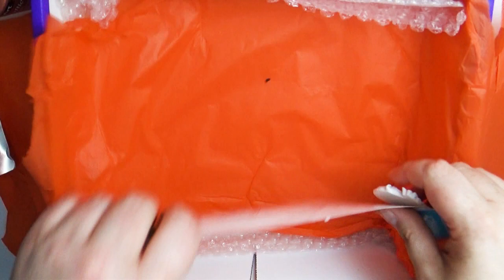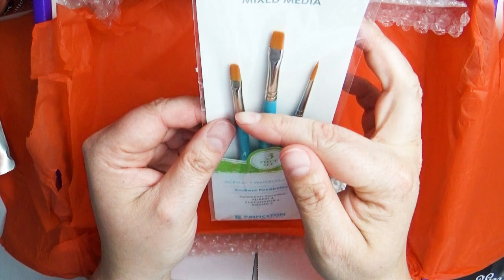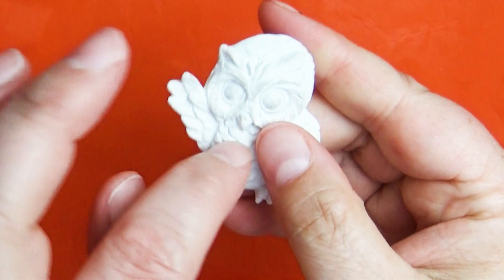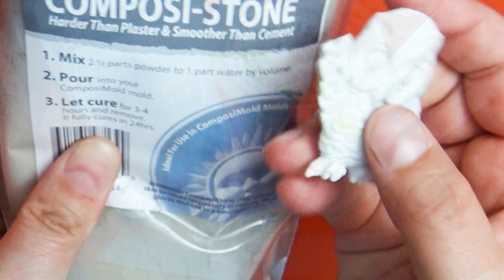Then we got a pack of paintbrushes: a fine point, a rounded, and a flat-headed paintbrush. And then this cute little owl - he's like a little ceramic, maybe the same stuff as this. That's everything that was in the box for this month. I'm going to read through this brochure and find out what to do with all this.